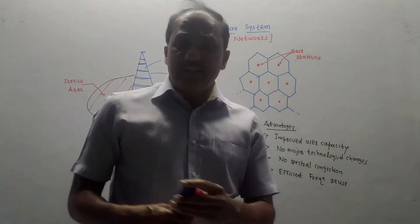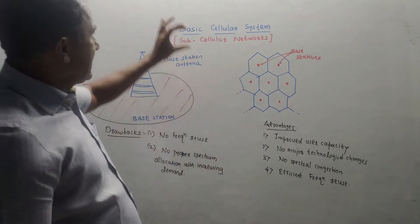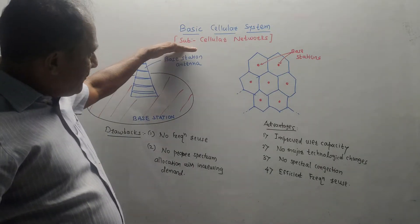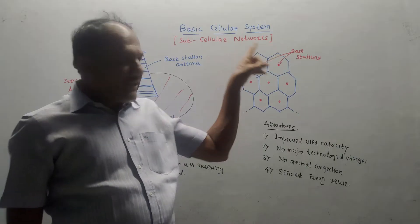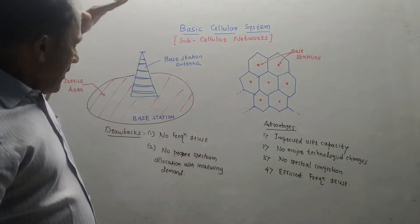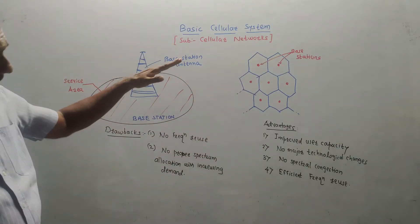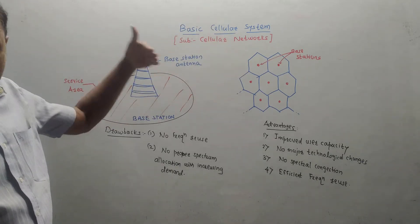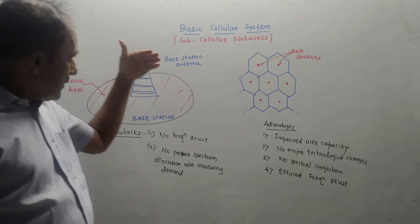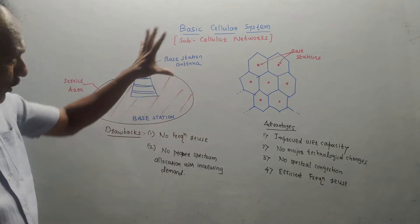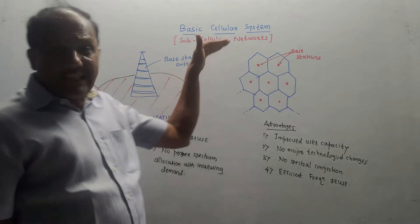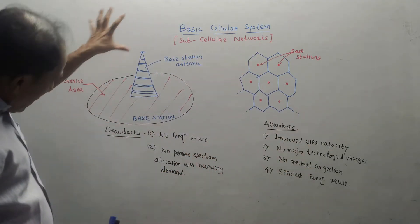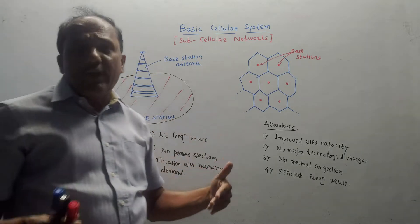Hello and welcome back to this channel. This topic is basic cellular system from the subject cellular networks for third year ENTC students. This topic of cellular networks is of prime importance from both theory and oral exam point of view, as I am going to cover the basic things required for cellular communication, that is, for mobile communication.